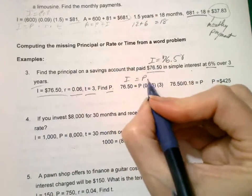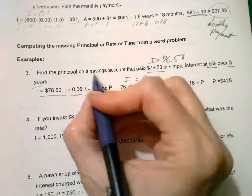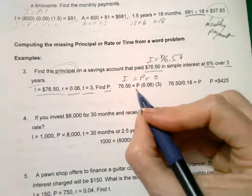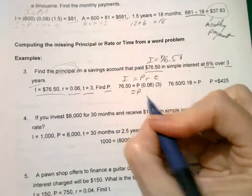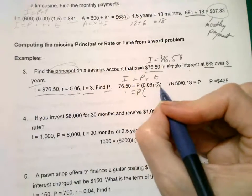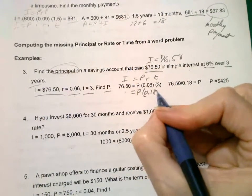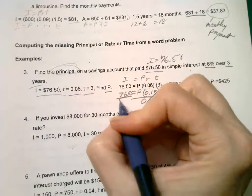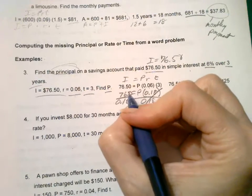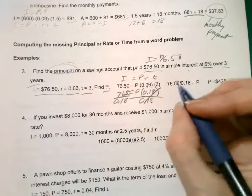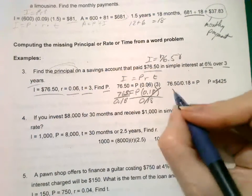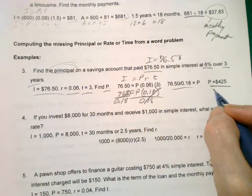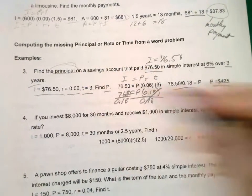So I equals PRT. And what is missing is the principal. So we're leaving that variable here, substituting the other ones. And then how do you get your P alone. Step one would be to multiply these two together and you're going to get 0.18. So you want to divide both sides by that. 76.50 divided by 0.18. Apparently that is $425. Let me know if any of these are wrong. So that's the principal that was put in the account that paid this much interest at this rate in this many years.